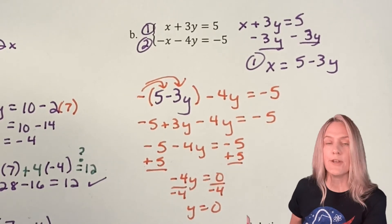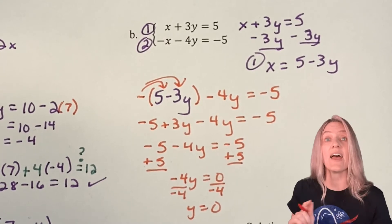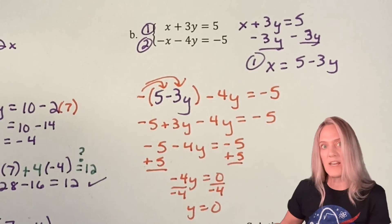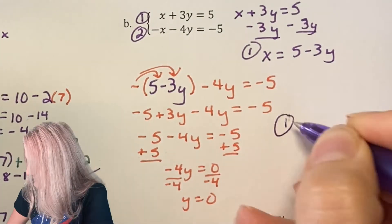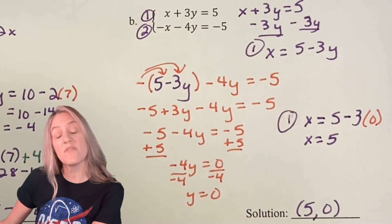Are we done? No. We know that the solution is a point, so I need to get that x-coordinate. It's super easy because x is already equal to 5 - 3y. Substitute in, we have our x-coordinate.